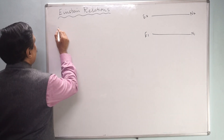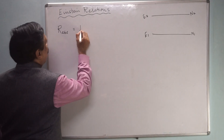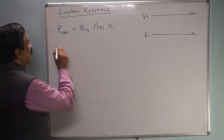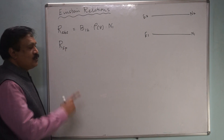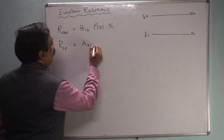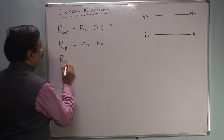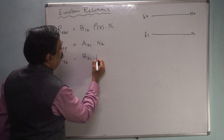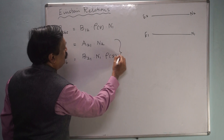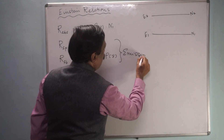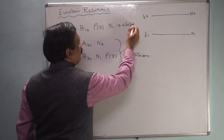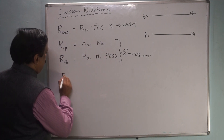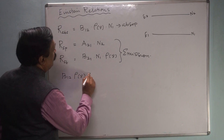I am writing the equation again. The rate of absorption is equal to B12 times ρ times N1 — this is from the first state to the second state. The rate of spontaneous emission is A21 times N2, and the rate of stimulated emission is B21 times ρ times N2 — both from the second state to the first state.